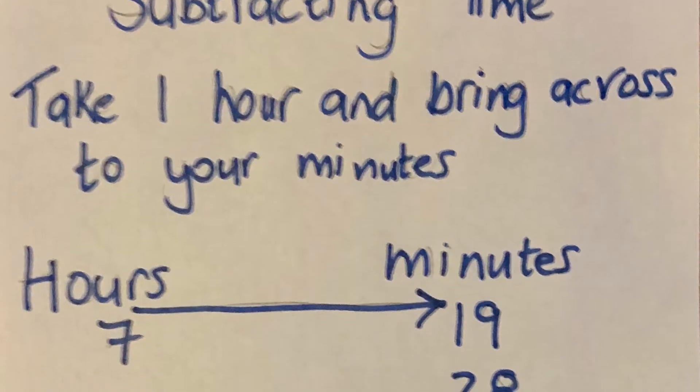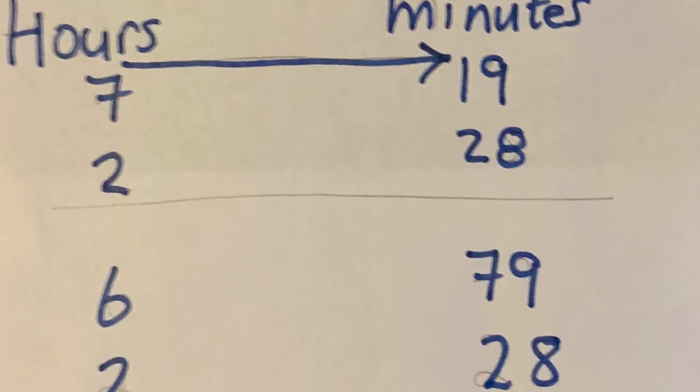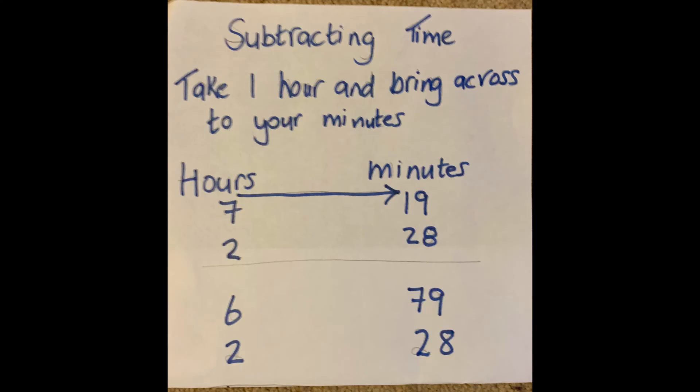So we're going to think about subtracting time. In this example we have seven hours and 19 minutes and we want to take away two hours and 28 minutes from that.